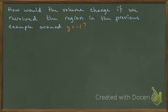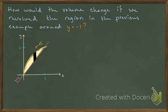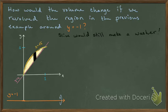One more example: how would the volume change if we revolved that same region — the one bounded by square root of x and x — not about the x-axis but about y equals minus 1? Bringing that picture back: revolving around y equals minus 1 instead of the x-axis. The same slice rotated around is still going to give me a washer — just notice there's a lot more empty space this time.